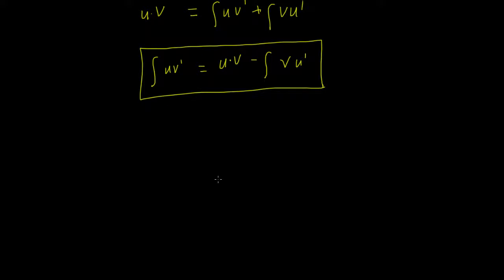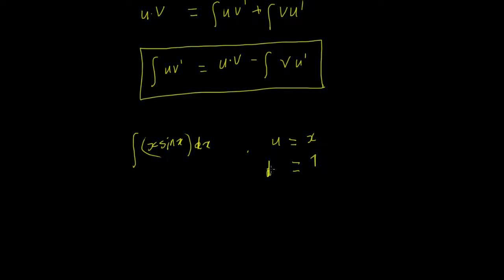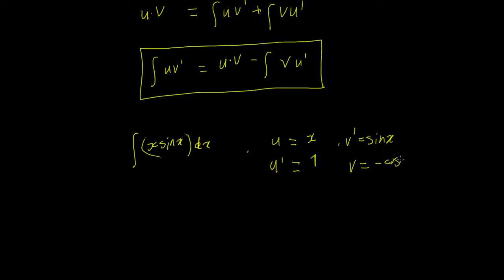As a simple example, consider the integral of x·sin(x) dx. We let u equal x, so u-derivative equals 1. And we let v-derivative equal sin(x), so v equals the integral of sin(x), which is minus cos(x).